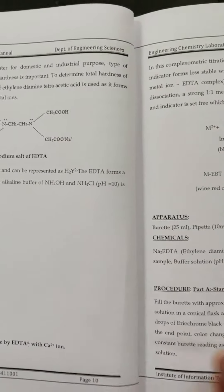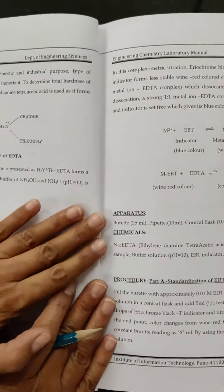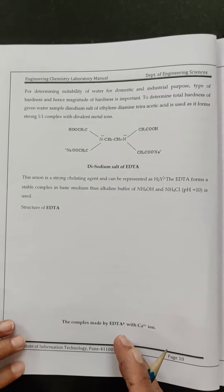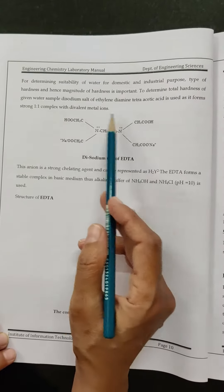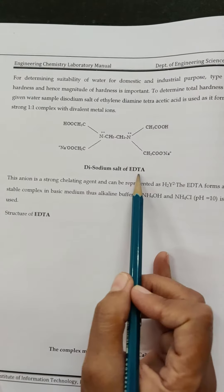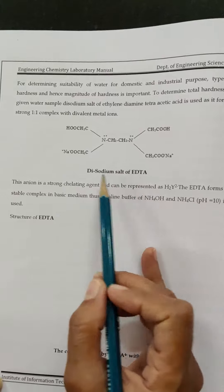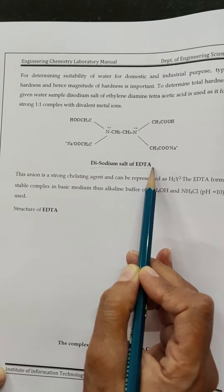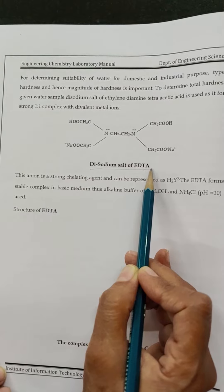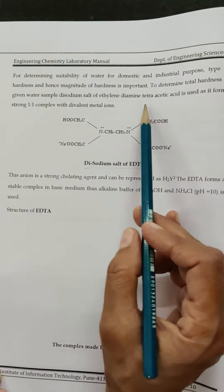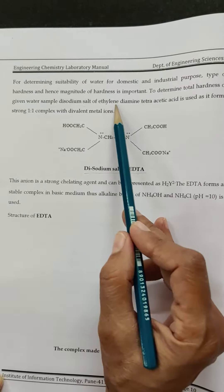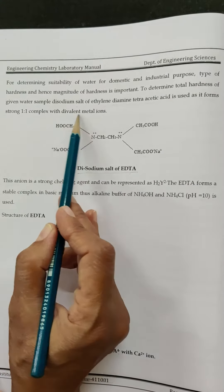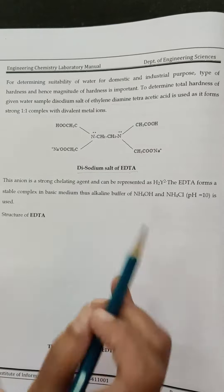The sum of temporary hardness and permanent hardness is called total hardness. This is the structure of the disodium salt of EDTA. In this titration, we are using the disodium salt of EDTA because EDTA itself is not much soluble in water. EDTA — disodium salt of ethylene diamine tetraacetic acid — forms a 1-to-1 complex with divalent metal ions.